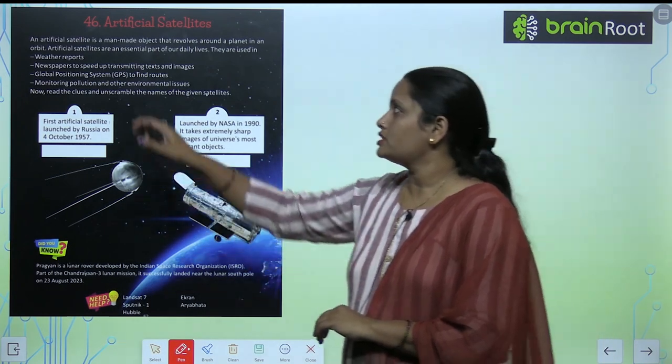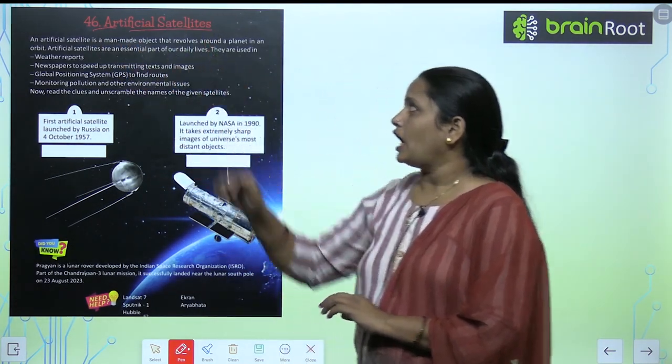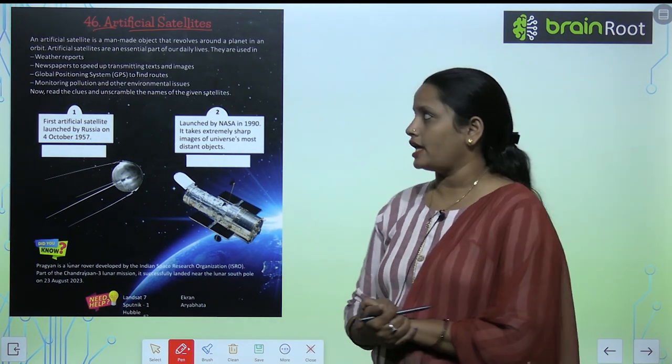So children, the next chapter is chapter number 46 and the name of the chapter is Artificial Satellites.